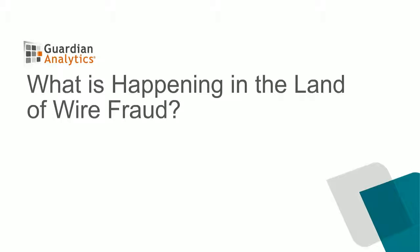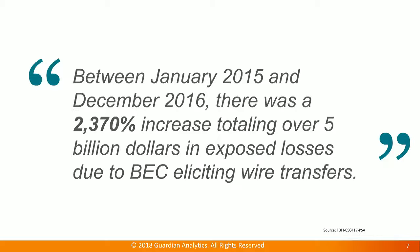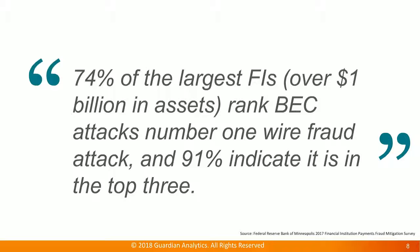What is really happening in the land of wire fraud? Between January 2015 and December 2016, there was more than a 2,000% increase in wire fraud, totaling over $5 billion in exposed losses, due mainly to business email compromise (BEC) and illicit wire transfer.